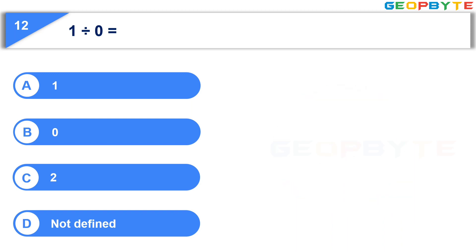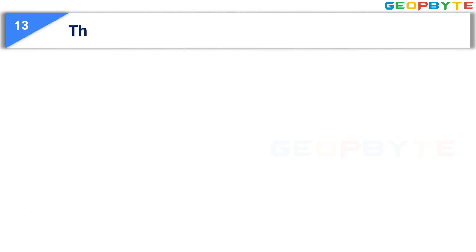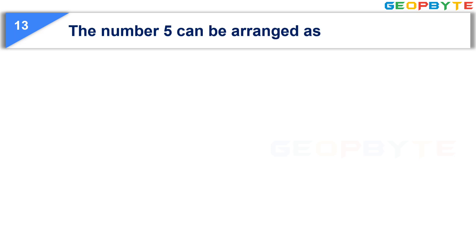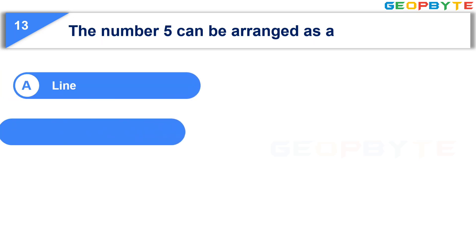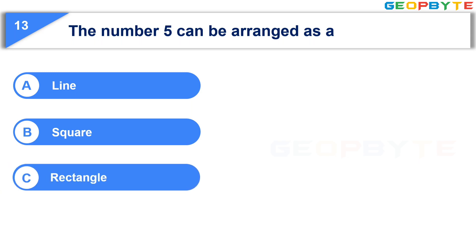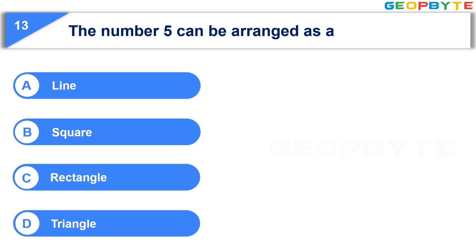Your time is up and the correct answer is Option D: Not defined. Now let us see the thirteenth question: The number 5 can be arranged as a. Option A: Line. Option B: Square. Option C: Rectangle. Option D: Triangle. Your time starts now.